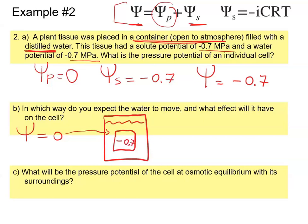We can predict that water will move into the cell, because water moves from high water potential to low. The water potential is lower inside the cell and higher outside, so water will rehydrate the cell and the cell will become more turgid as it takes up water.